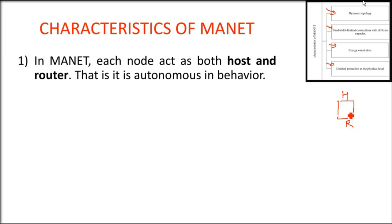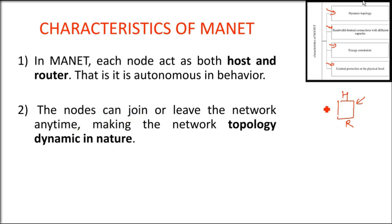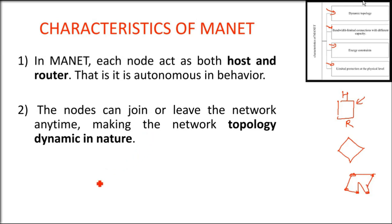If you make a LAN, you need a router or a switch. Here you don't need it — the same gadget is both host and router. Individual behavior is autonomous and independent. The nodes can join or leave the network at any time, which means the topology is changing; it is dynamic in nature. You can assume the vertices of different figures represent the nodes, and it changes dynamically every time.